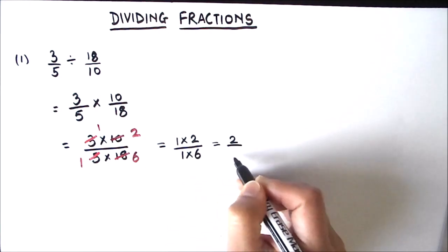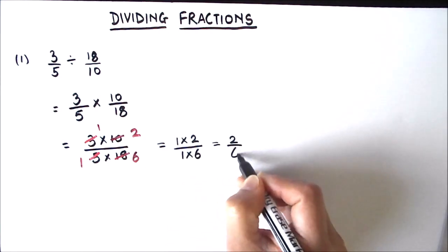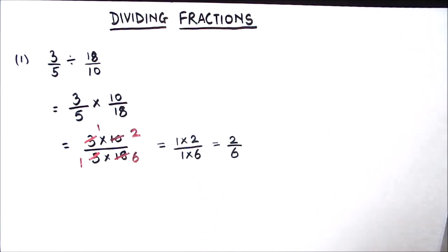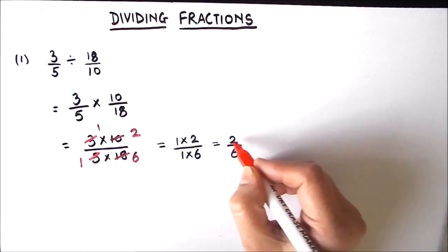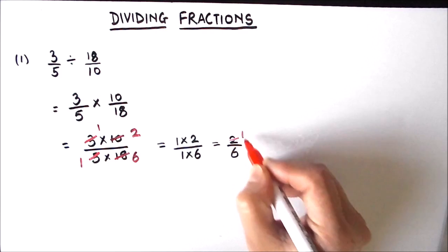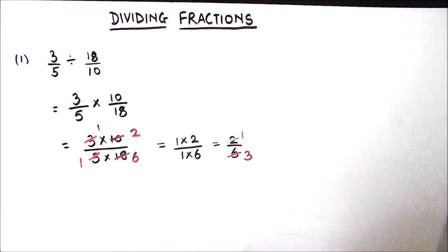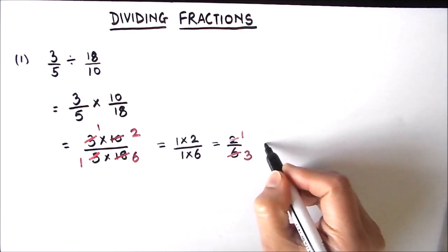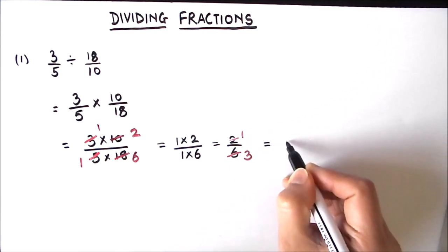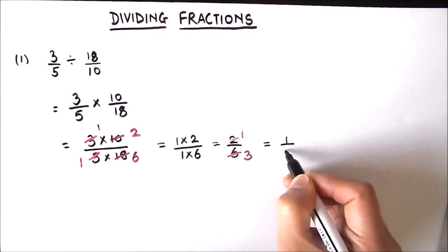That gives us 2 over 6, which we can further reduce since 2 and 6 have a common factor of 2. So 2 times 1 is 2 and 2 times 3 is 6. Our final fraction is 1 upon 3.